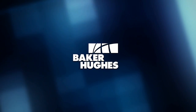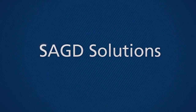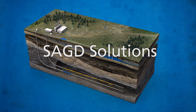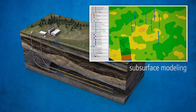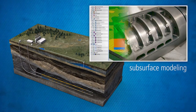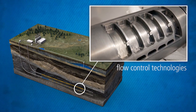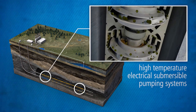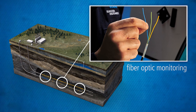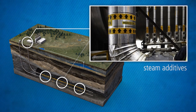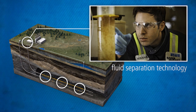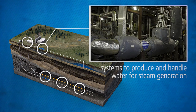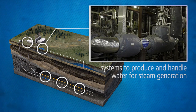Baker Hughes can provide a combined solution to help operators improve efficiency and enhance recovery from their SAG-D wells. Our SAG-D solution includes subsurface modeling, flow control technologies, high temperature electrical submersible pumping systems, fiber optic monitoring, steam additives, and fluid separation technology. We also provide systems to produce and handle water for steam generation.